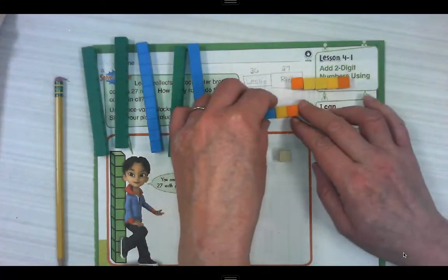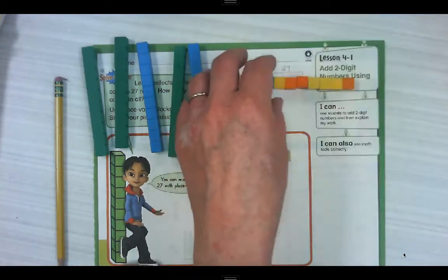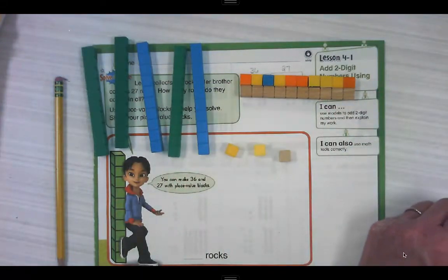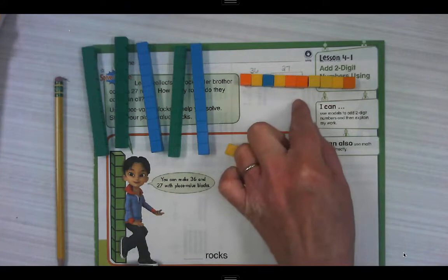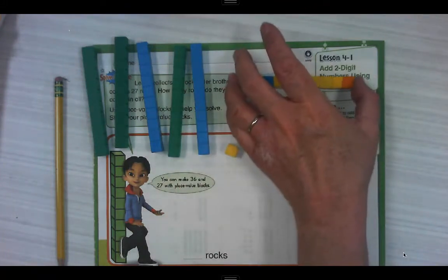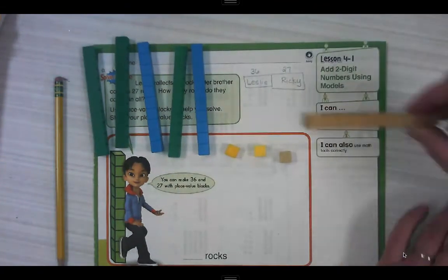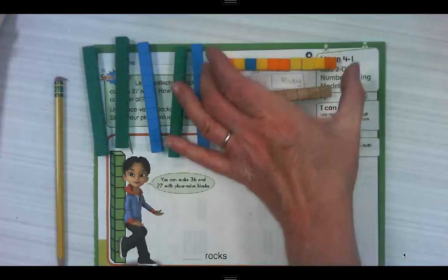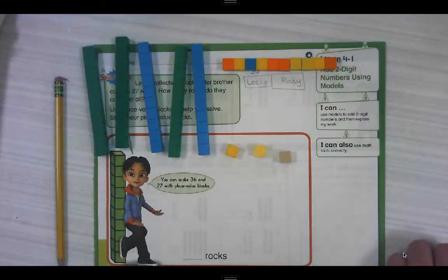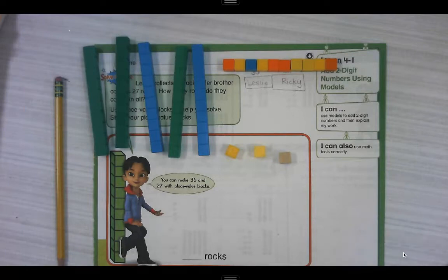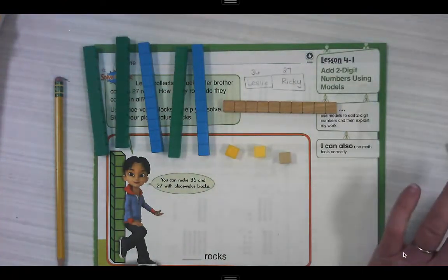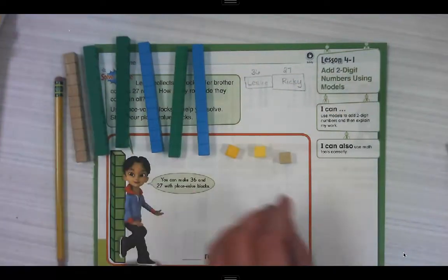When we have 10 ones, we can regroup those into a 10. Do you see that those are equal? So what I'm going to do is I've got this 10. I'm going to scoop these over to the side and I'm going to swap them out for this. Is that equal? Did I just trade something that is the same? Think about compensation where we could add and subtract as long as we did it to both the addends. So this is equal. I just swapped out 10 ones for one 10.